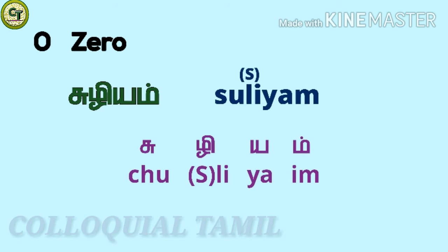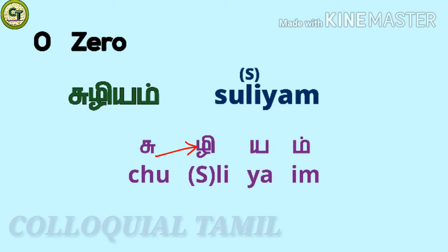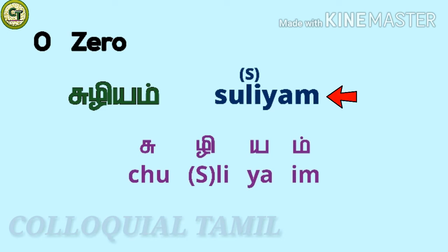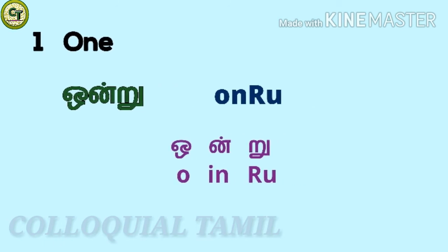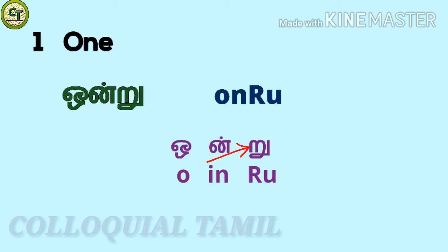0 in Tamil is 'suriam'. S, u (a short vowel), ri (a short vowel), a short special letter, m with a consonant together: suriam.